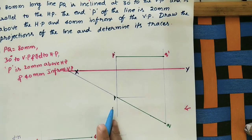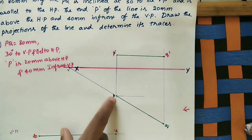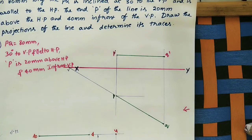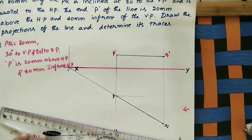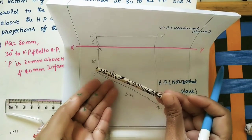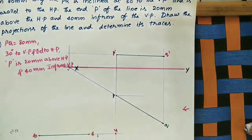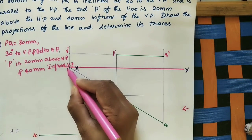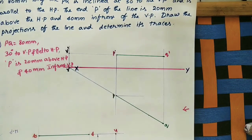This intersection point in the top view is marked as small v — the vertical trace in the top view. To get the front view of the trace, draw the projector line at that point. Extend the front view line — the vertical trace appears here as v-dash. Extending both lines, the intersection point in the front view is v-dash, which is the vertical trace in the front view.